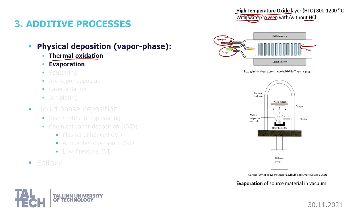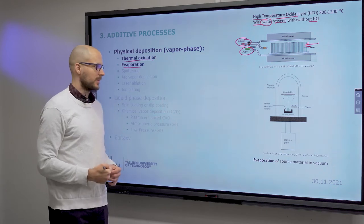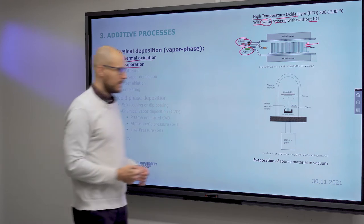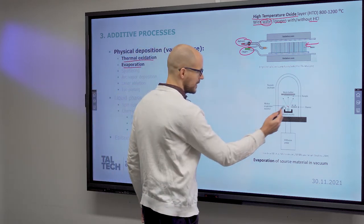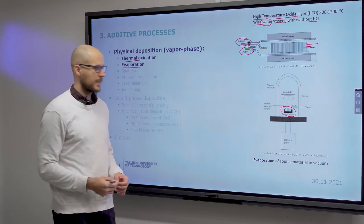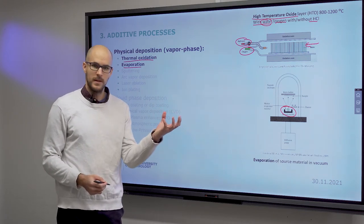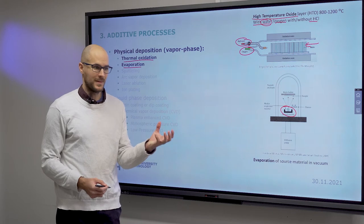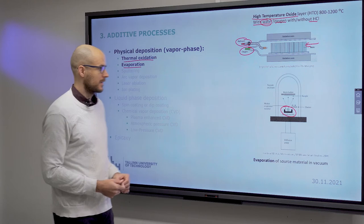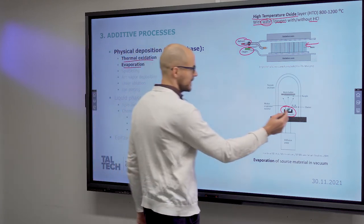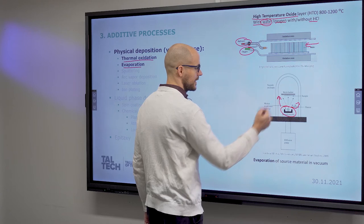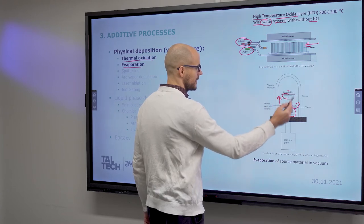Evaporation is another physical vapor deposition method, in which you heat up your source material in a crucible, a thermally resistant pot. This is done in vacuum, and your heated material evaporates into this enclosure and deposits onto your sample.